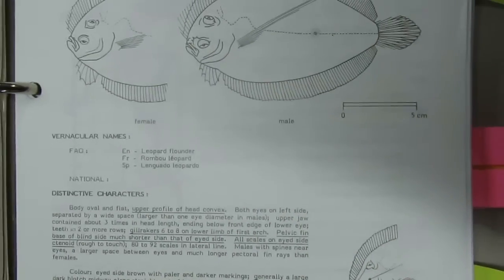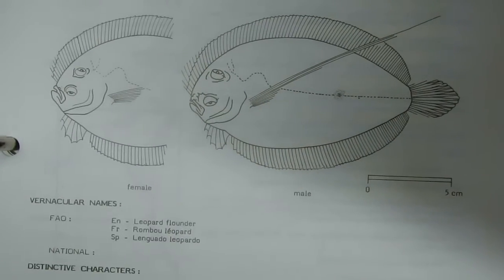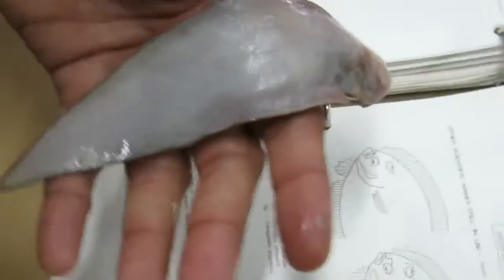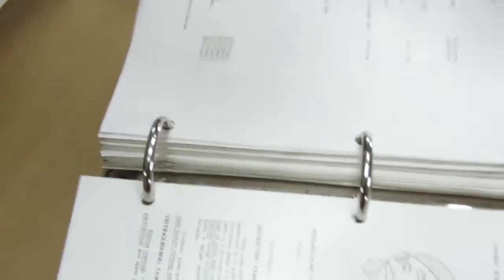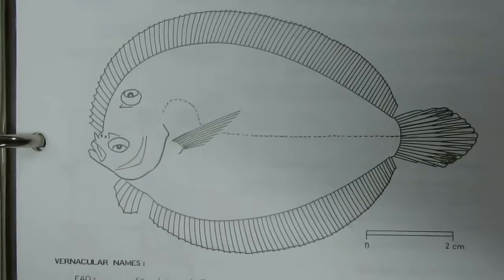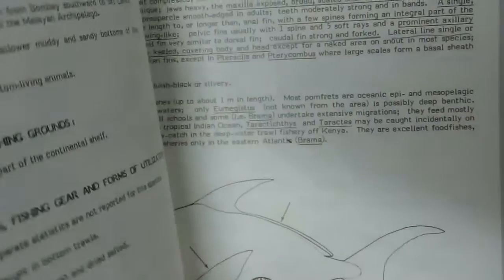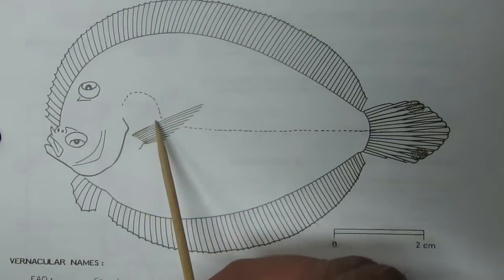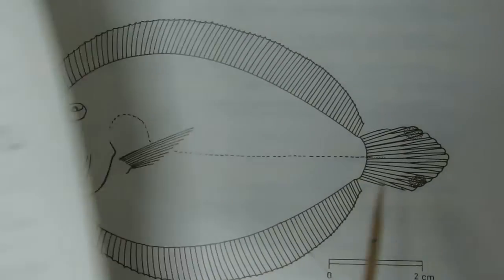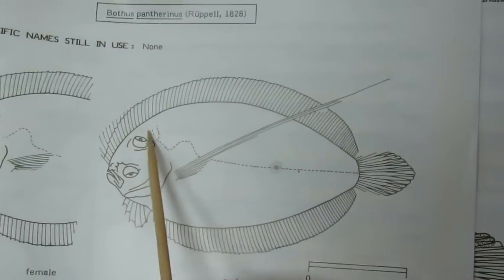Next family is Bothidae. The single lateral line is sometimes found or absent on the blind side. In the case of Bothus species, the lateral line has a forked branch behind the upper eye. In the case of Arnoglossus species, the lateral line has no forked branch behind the upper eye. You can find a curved lateral line above the pectoral fin in Bothus.